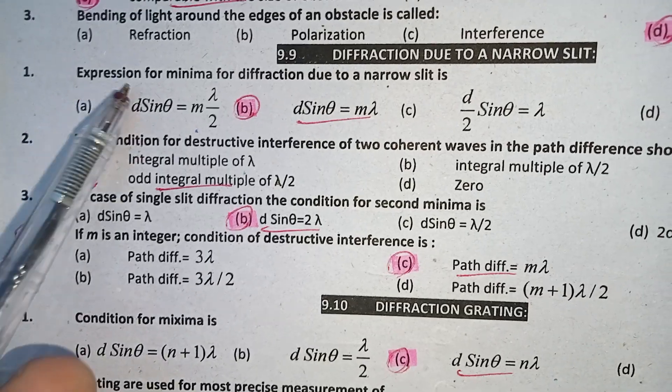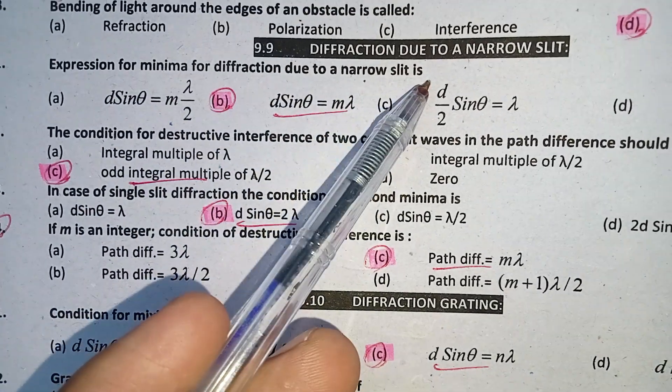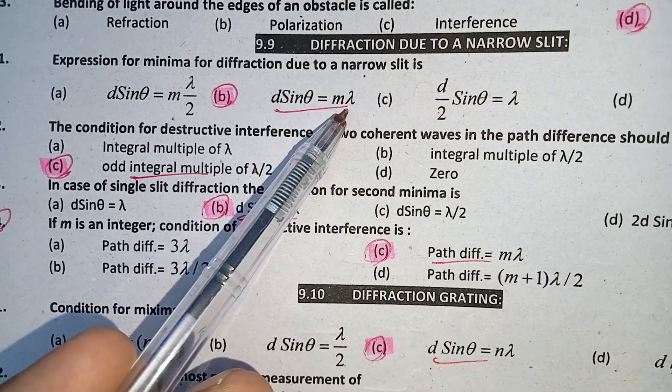Question one: The expression for the minima for diffraction due to narrow slits is given by d sin theta is equal to m lambda.